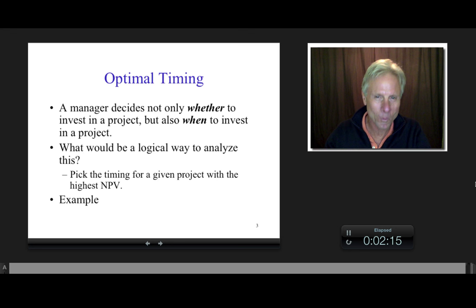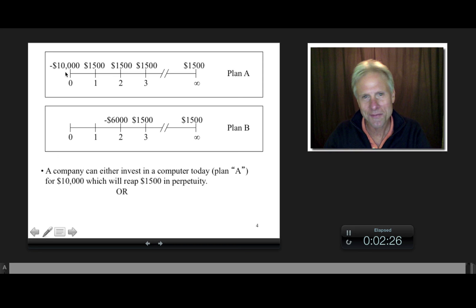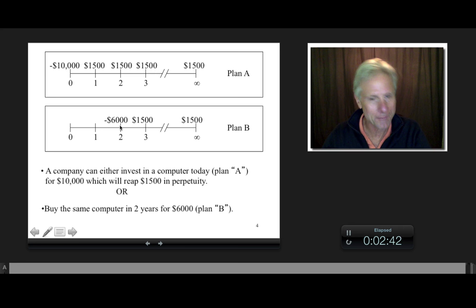So imagine a company is thinking, well, alright, I can either invest in a computer today, and it's going to cost me $10,000, and as a result, imagine it's going to save me $1,500 forever. Or I could delay a couple of years or time periods, and the price of the computer is going to go down, but it's the same computer just to illustrate this technique, and so I'm going to reap the same benefits. And let's assume that the discount rate for these choices is 10%.